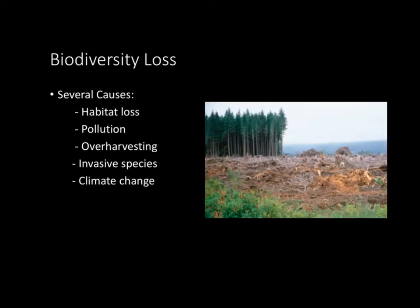Over-harvesting refers to animal hunting, not crops. This is a problem when hunting large, long-living species such as tigers. It takes a longer time for them to reproduce and there are fewer of them, so if you over-harvest and poach them, they're not going to be able to repopulate and biodiversity goes down. When looking at invasive species, you can see that as biodiversity loss — for example, the cane toad comes in and kills all of the native species, and now you only have this one invasive species running everything, which reduces biodiversity.